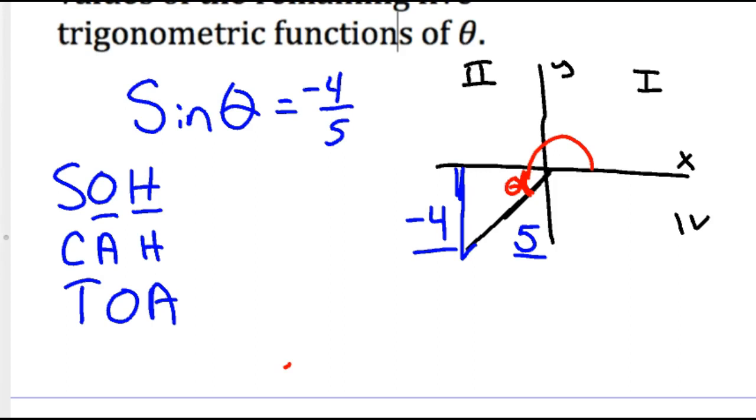Then the other part of that is we need to find this X value, which will also be negative because you're going from zero, zero here. You're going left first. So that's the negative direction.